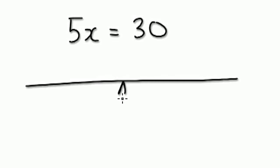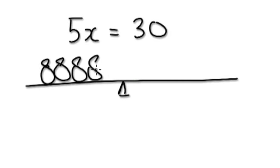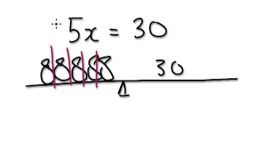If someone gives you something like 5x equals, let's say, 30, what they're saying is you've got 5 bags - 1, 2, 3, 4, 5 - and 30 sweets. To get one bag on its own, divide both sides by 5.